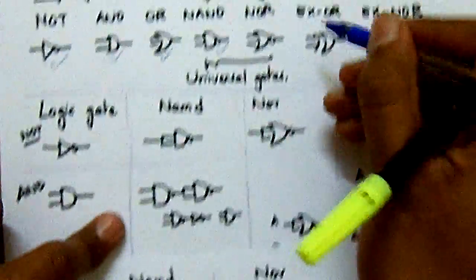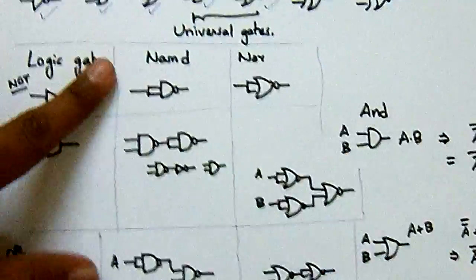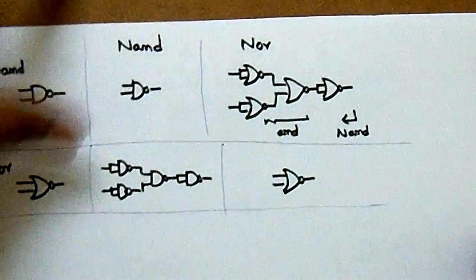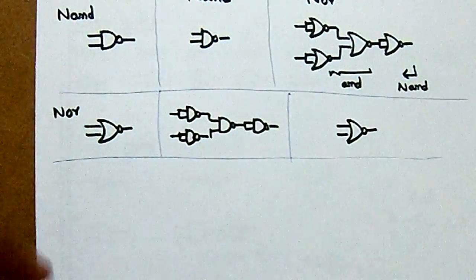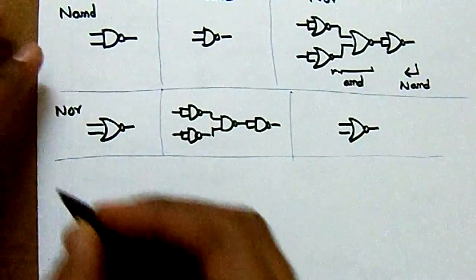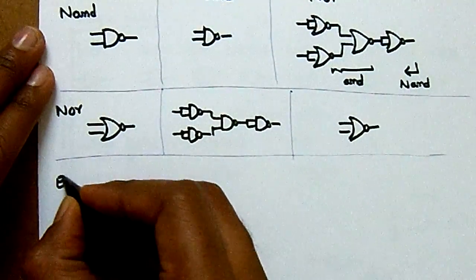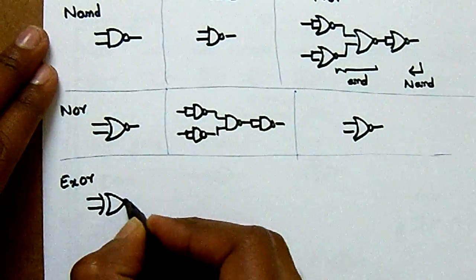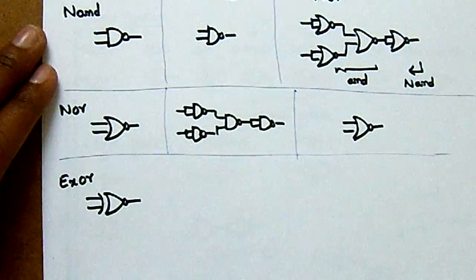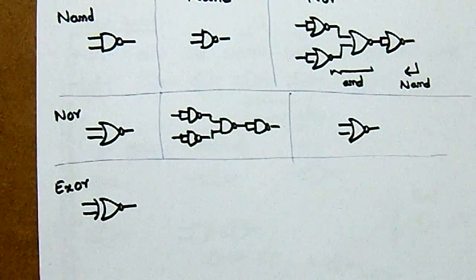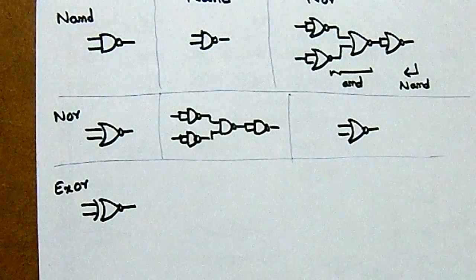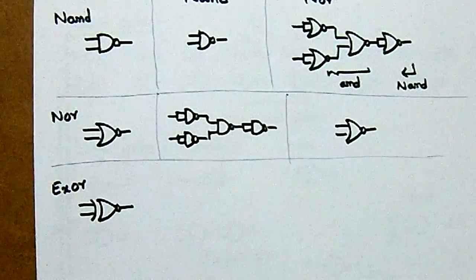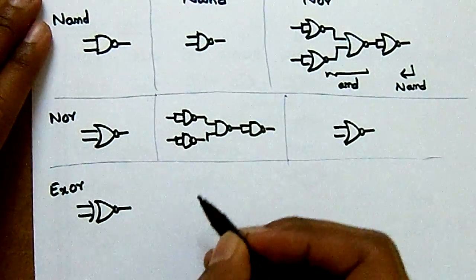We have also completed NOR gate representation. Now we are left with XOR and XNOR. XOR and XNOR are a bit complex structures. We have an equivalent derivation but it is quite large, so let me show you the structure of representing XOR gate in terms of NAND and NOR. It is called a butterfly structure.